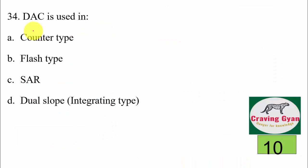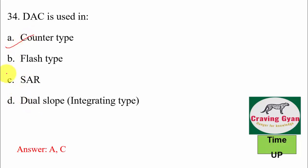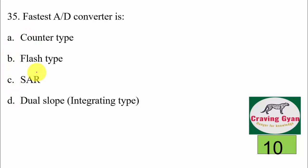34th question: DAC is used in — counter type, flash type, SAR, or dual slope? Multiple options may be correct. DAC is used in counter type as well as successive approximation register type. Hence options A and C are correct.